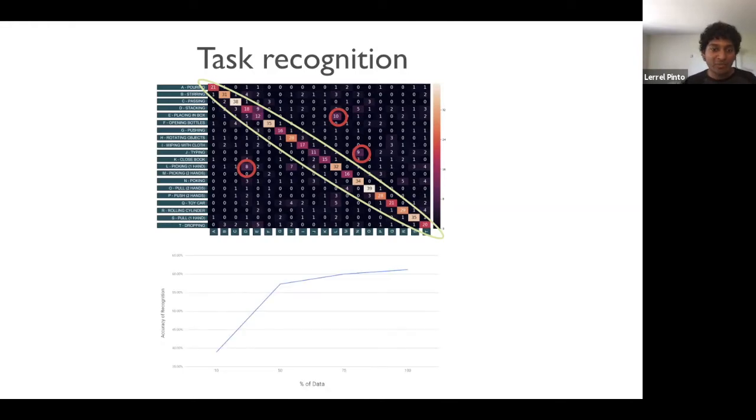Another interesting thing we see over here is that as we keep increasing the amount of data, the accuracy of these models also keep improving. So at 10% of data, we have around 30% accuracy in our recognition models. However, when we increase the data to around 80%, we can get an accuracy of more than 60%.